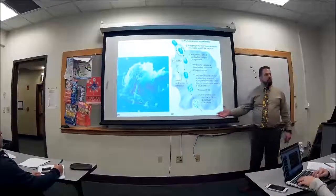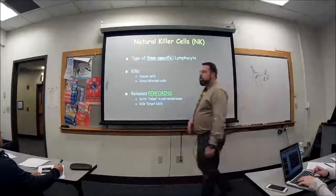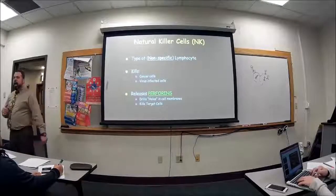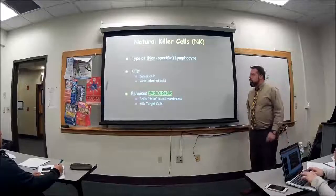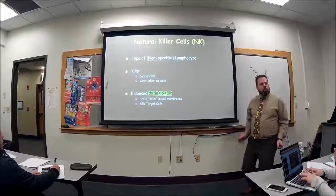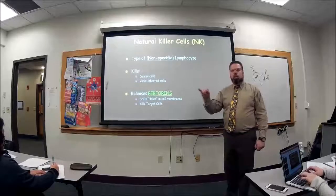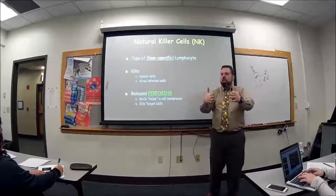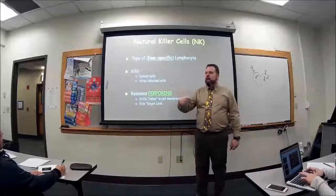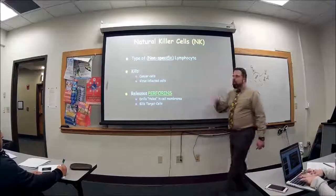Natural killer cells are a type of lymphocyte — the only lymphocyte that's actually part of the nonspecific or innate system. They will kill cancer cells and virus-infected cells. How? They release chemicals called perforins — think of perforation — and they actually put holes in those cells. When you perforate that cell, it allows fluid from the outside to go into the cell, changing the membrane potential so much that the cell bursts.